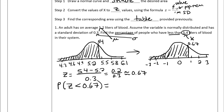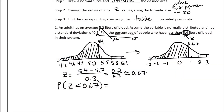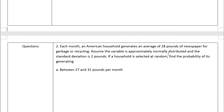Looking up 0.67 on the z-table gives 0.7486. Since they want the percentage of people, that translates to 74.86%. That is our final answer.